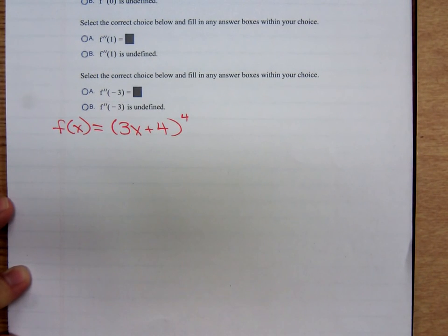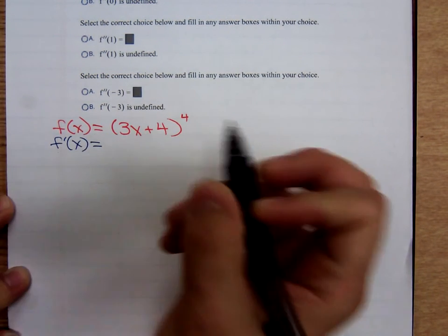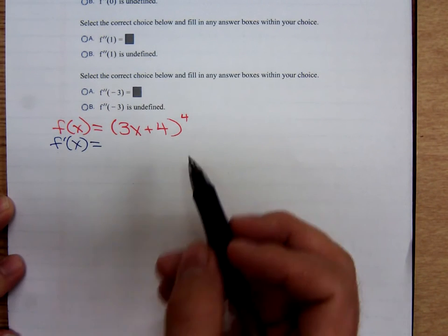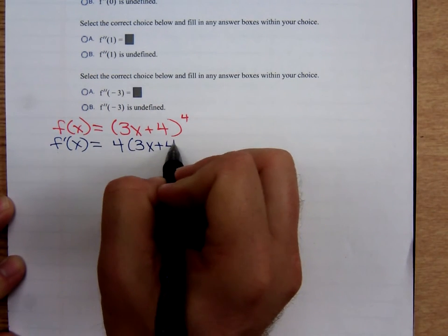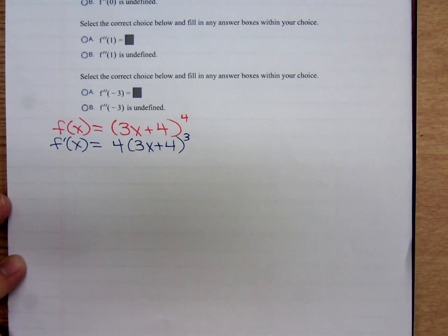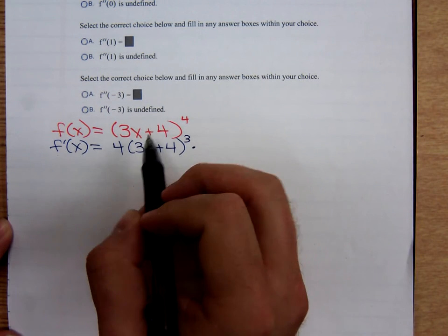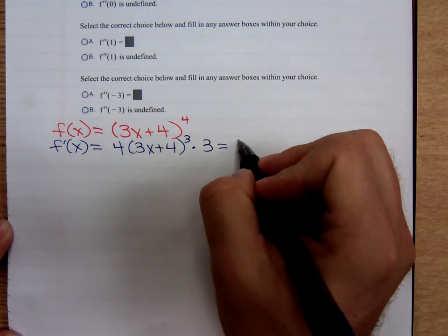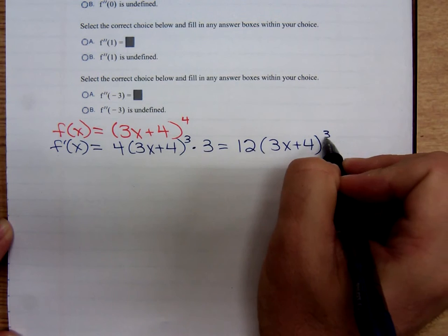I can't just skip to the second derivative. First, we find the first derivative, f prime of x. That's a quantity raised to a power, so we'll use the generalized power rule. Bring down the 4, leave the inner function alone, subtract 1 to get the new exponent. We're differentiating the outermost function, then we multiply by the derivative of the inside function. The derivative of 3x + 4 is 3. So, f prime is 12 times (3x + 4) cubed.